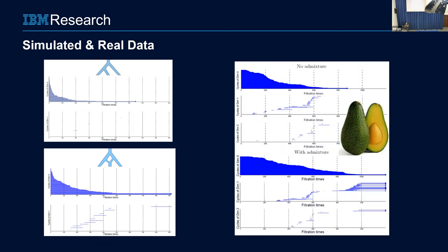We applied this to simpler models and one application was in plant genomes, where we looked at different varieties of avocados. The interest there is in genetic diversity — they want to know if some of these varieties are admixtures of others. We used this algorithm to check which varieties were admixed from the other ones. We knew the answer, so we could verify that the algorithm was correctly pulling out the admixed cultivars.